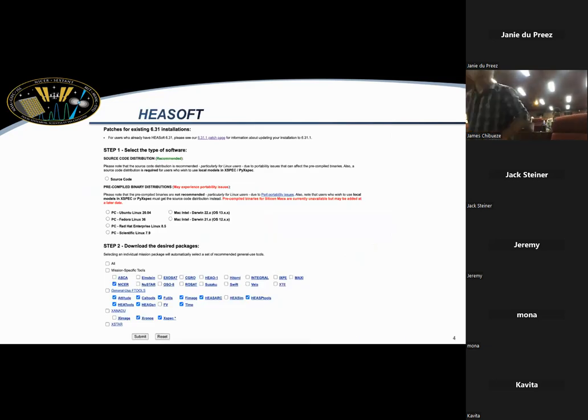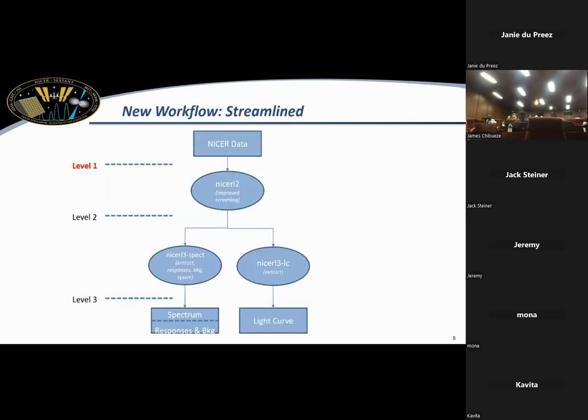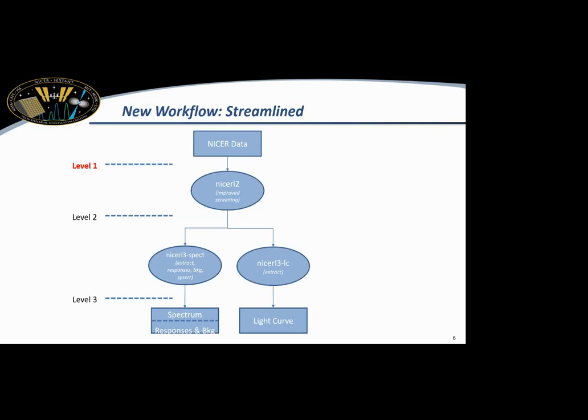So I guess most of you already have HEASOFT installed and you've selected the NICER option, but in case you're not, this is where you go to get the data. There's one important thing you should know when you're analyzing NICER data now is that the background models use this geomagnetic data, which is basically space weather. So you need to export this geomagnetic path or else you'll get an error when you're reducing the data. But we'll come back to that later when we're actually looking at data. So the NICER workflow is pretty straightforward. It starts out with your data. You run NICER L2, which basically does some cleaning and calibration, and then NICER L3.